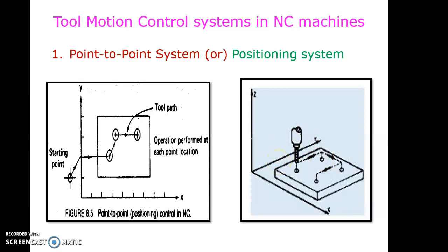This is called point-to-point: we perform the required operations at particular points, but while the tool moves from one place to another, there is no material removal during the path of travel. It does not concern itself with the path traveled. A conventional drilling operation is the best example of this system.